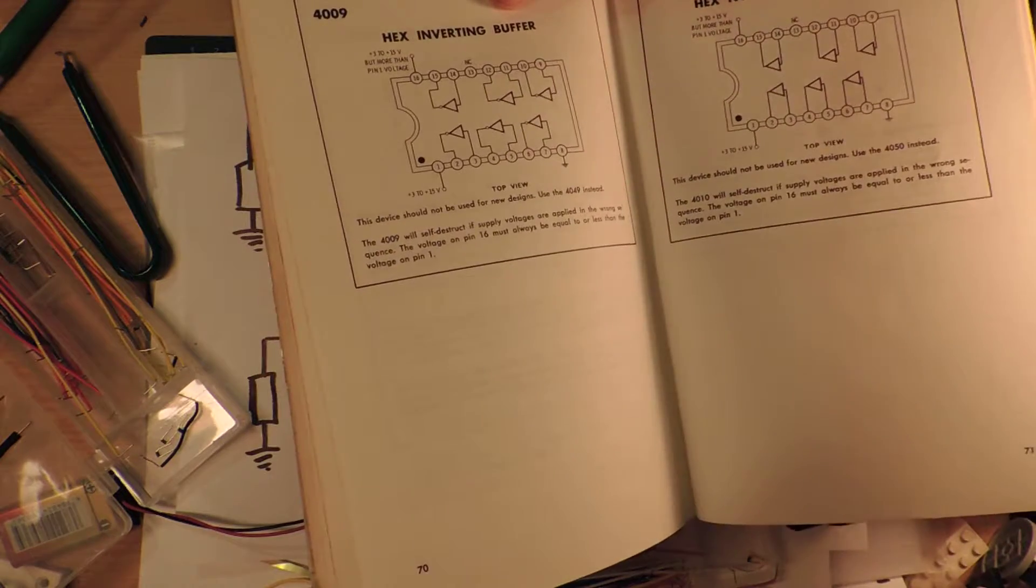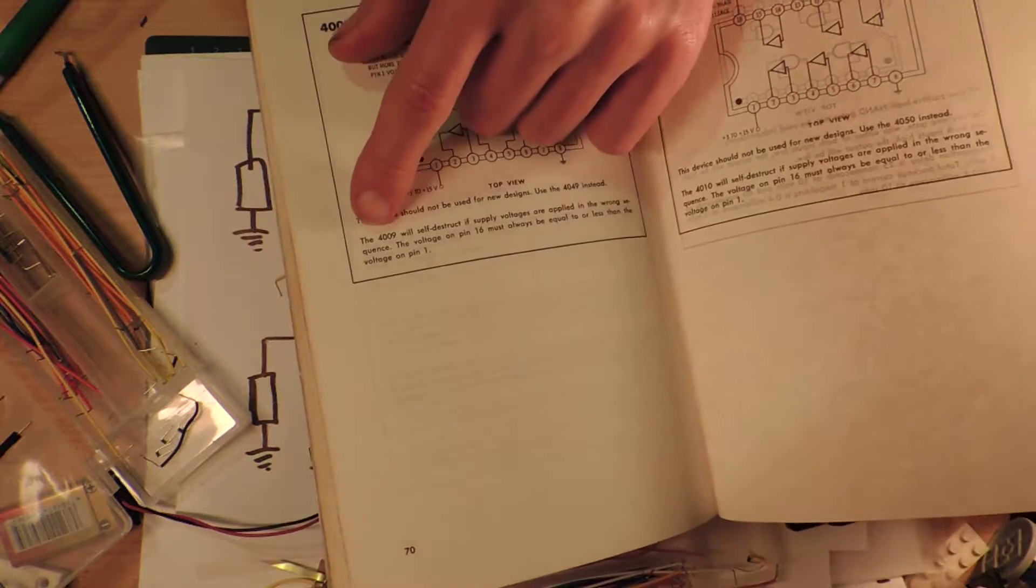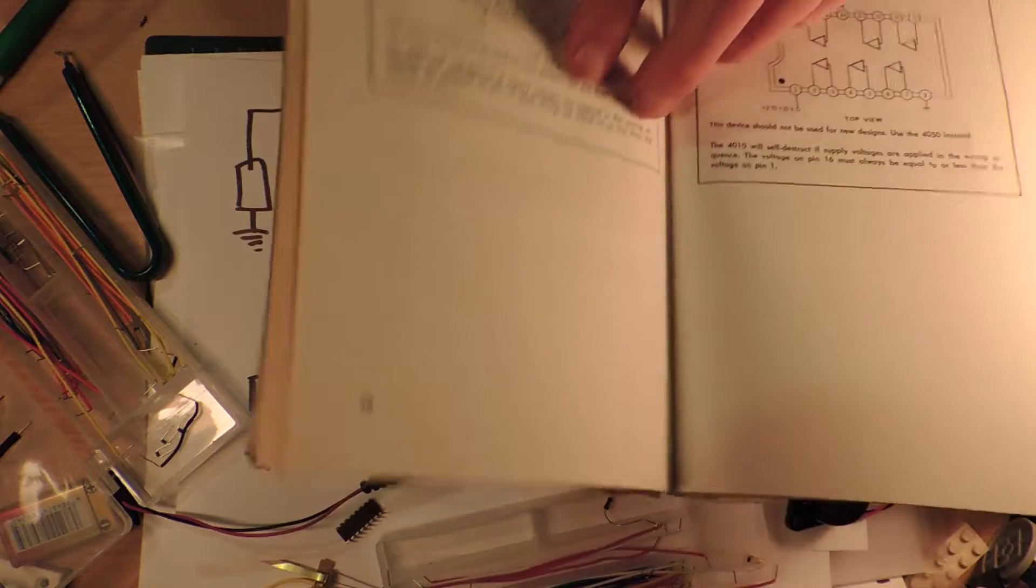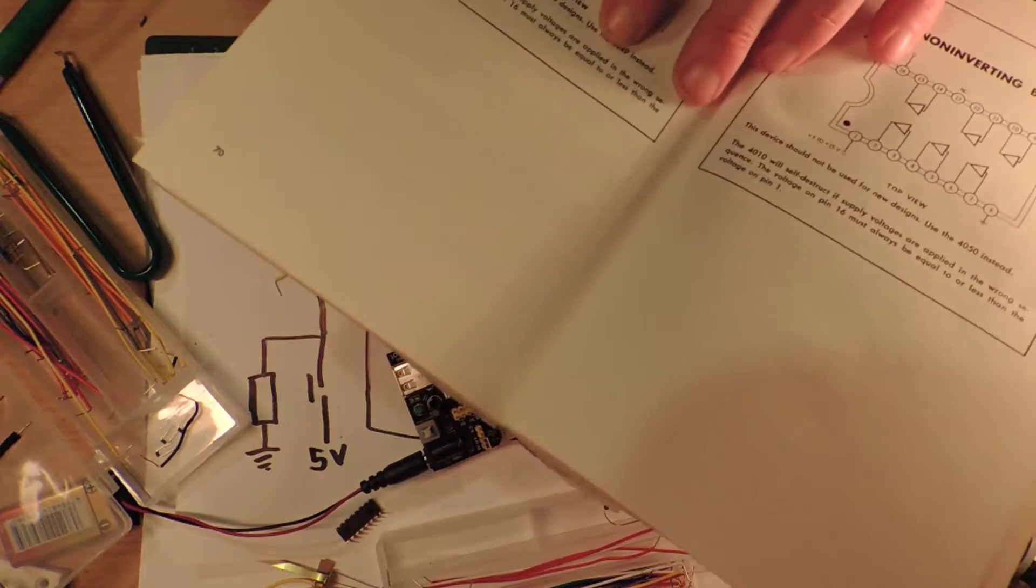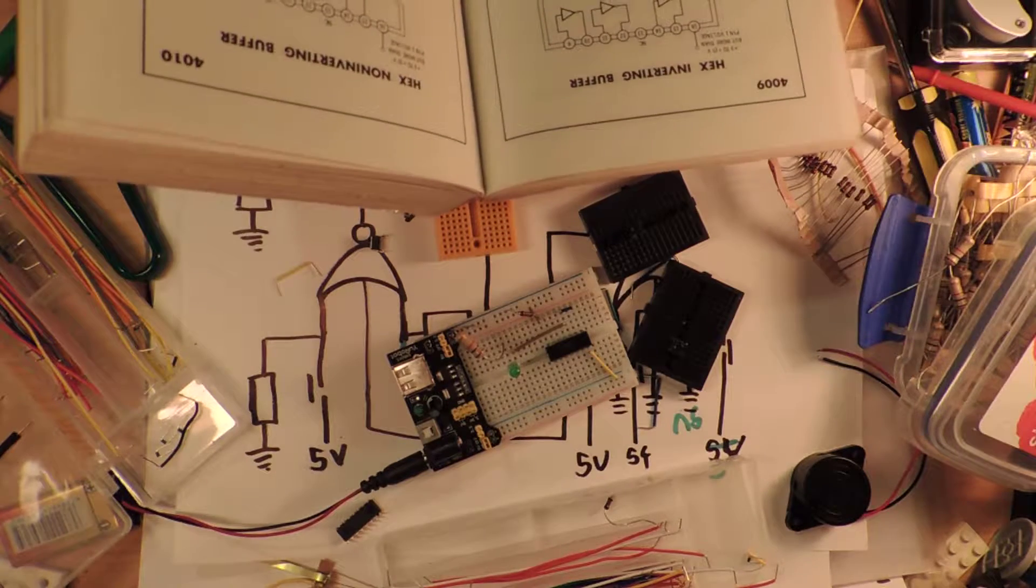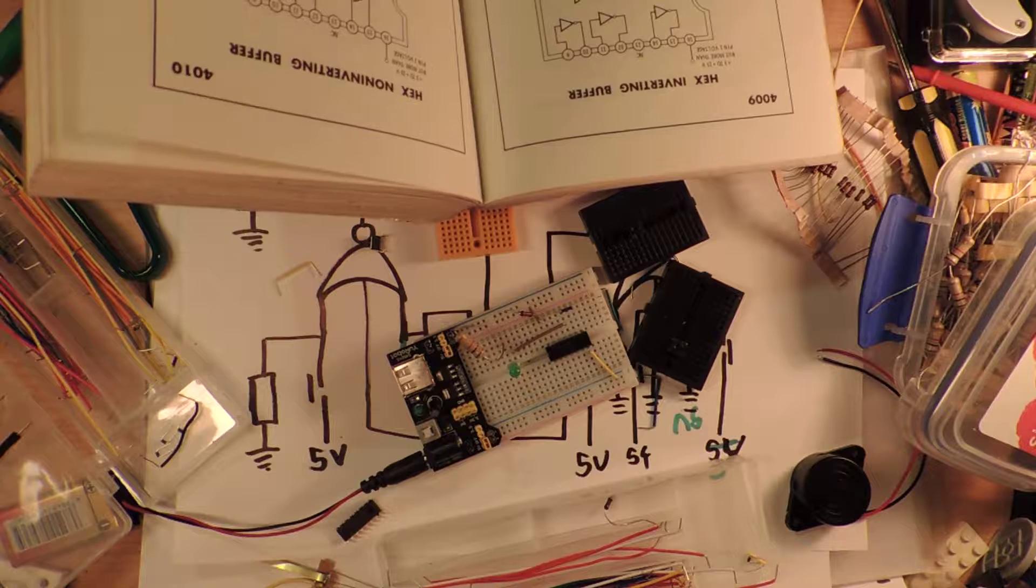We've got this hex inverting buffer. So this is like the first version before the 4049. And the 4049 will self-destruct if supply voltages. I'm going to read this. It says the 4049 will self-destruct if supply voltages are applied in the wrong sequence. The voltage on pin 16 must be always equal or less than the voltage on pin 1.